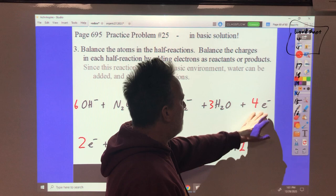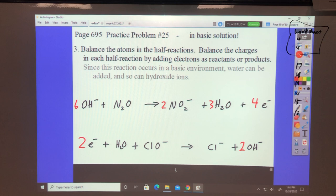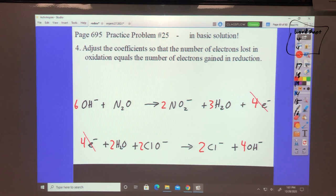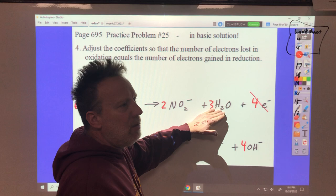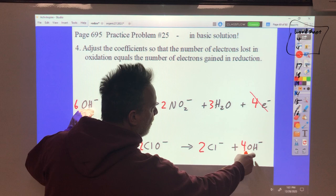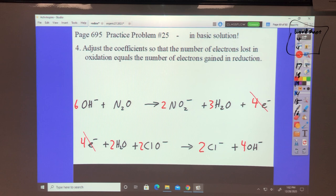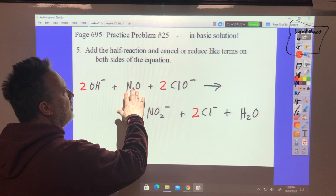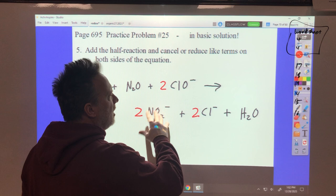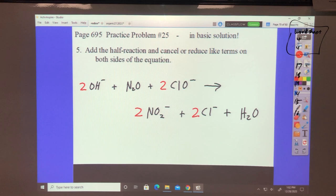Now we have to add these. Well, if I double this whole equation, I'll have 4 electrons in either side. So do that. Now I have some things that will cancel. I have 2 waters and 3. So 2 of those will cancel and I'll be left with water here. I have 6 hydroxides and 4. 4 of them will cancel, leaving 2 hydroxides here. When you add that up, do it, stop, check. Then you have 2 OH minus, N2O, 2 hypochlorite ions, and 2 nitrate ions and 2 chloride ions in water.